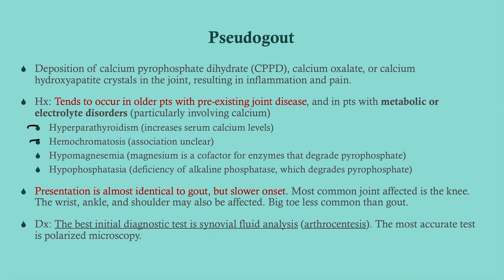Hemochromatosis — we don't fully know why, but it does raise the risk of pseudo gout. Hypomagnesemia is a risk factor because magnesium is a cofactor for enzymes that degrade pyrophosphate. So just like with any stone formation, if either calcium or pyrophosphate is elevated, your risk goes up. Low magnesium increases pyrophosphate. There's also hypophosphatasia — a deficiency of alkaline phosphatase — which is extremely rare with only about 500 documented cases, but worth including for completeness.